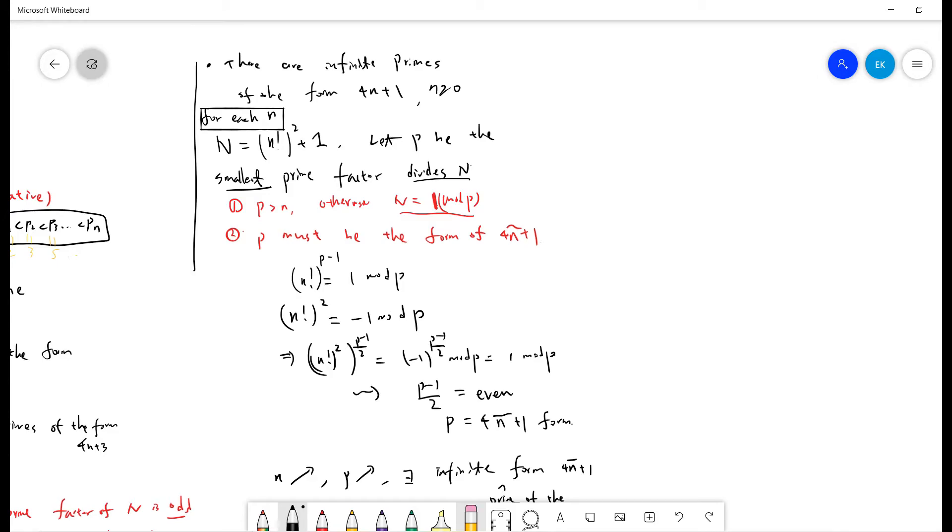Let's first see p greater than n. If p is not greater than n, then if you divide by p, then this n factorial will be 0. Then N equals 1 mod p. So p cannot divide N. So the only possibility is that p greater than n.